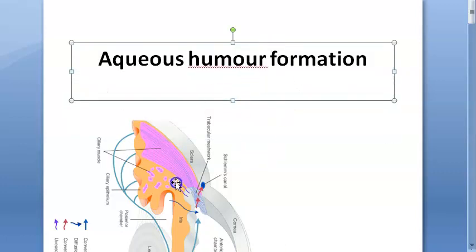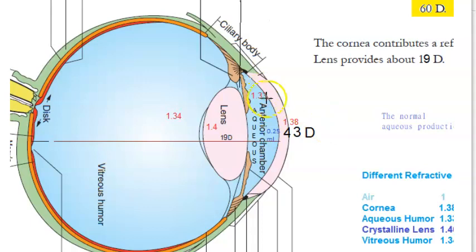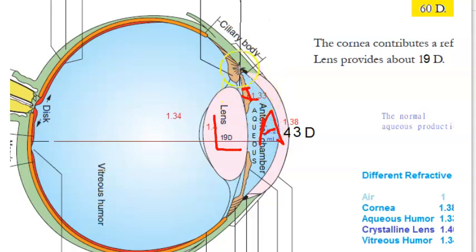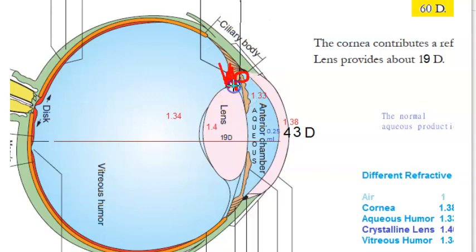In this video, let us look at aqueous humor formation. Here you have the lens of the eye, here you have the iris, here you have the anterior chamber in front of the iris. Behind the iris, what you have is the posterior chamber. Aqueous humor is generated there and comes out of the pupil, going into the anterior chamber.